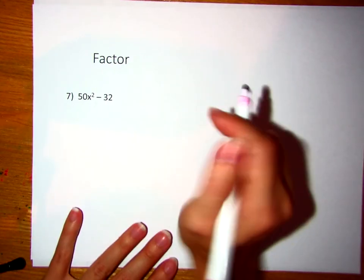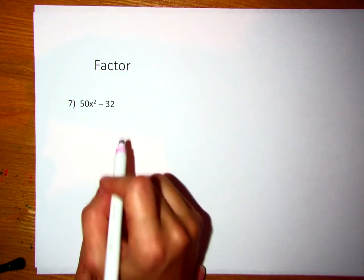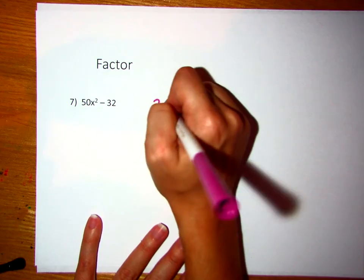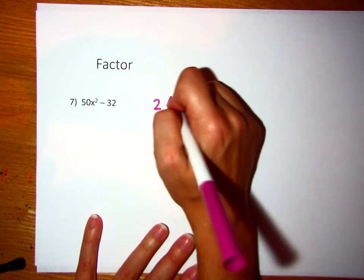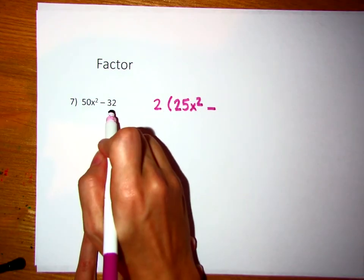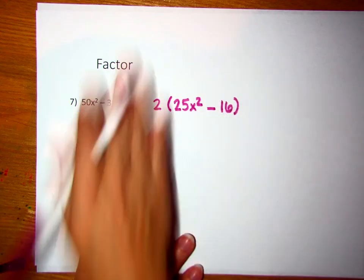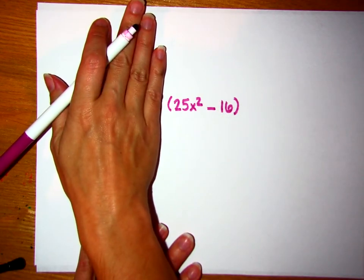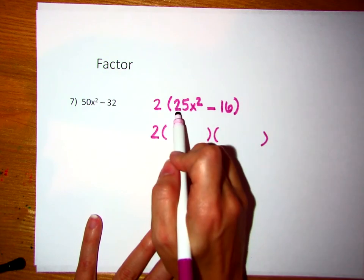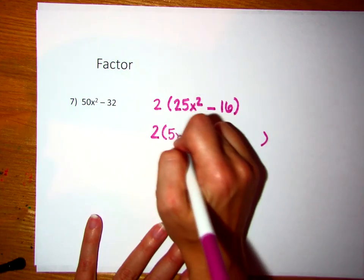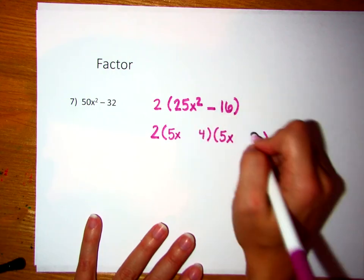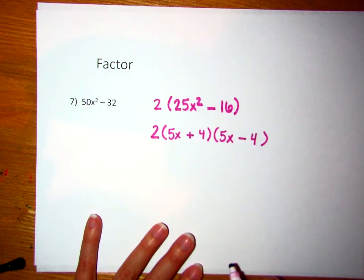Sometimes you're given one where you have to take out a GCF. What can we divide out of both? We can divide 2 out of both. 2 times what gives me 50x squared? 2 times 25x squared. 2 times what gives me 32? 2 times 16. Now if I cover that up, we've got a difference of two squares. We bring the 2 down and open two parentheses. What times itself gives me 25x squared? 5x. What times itself gives me 16? 4. One's positive, one's negative.